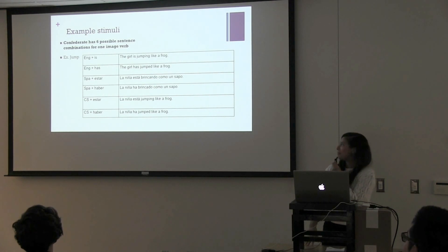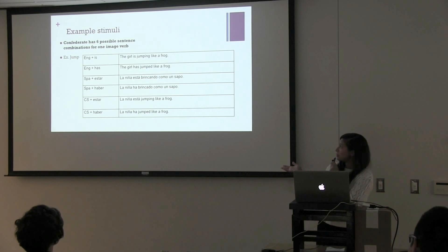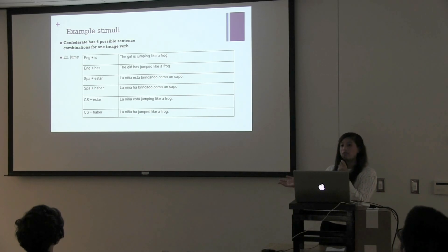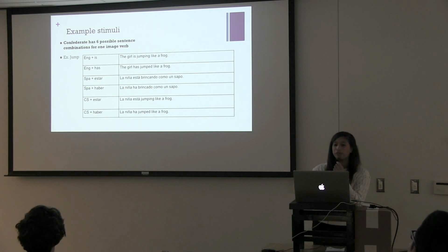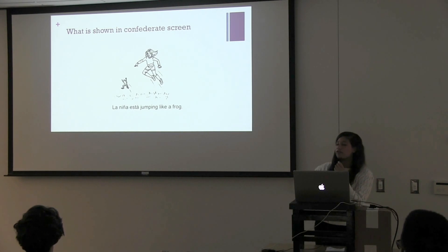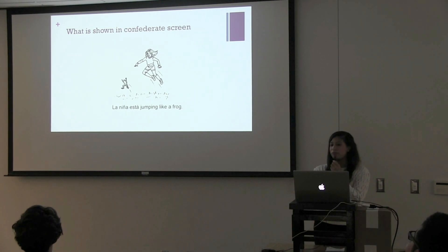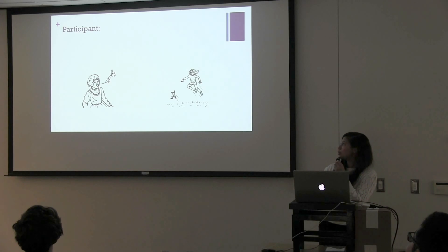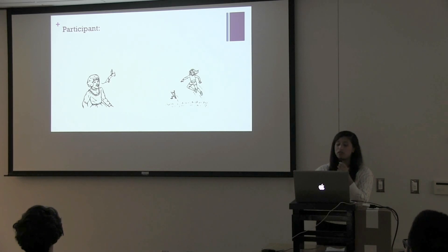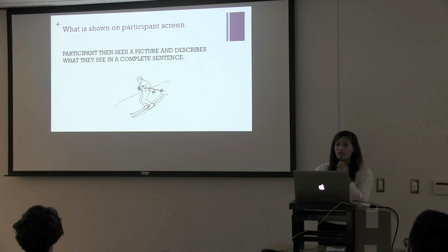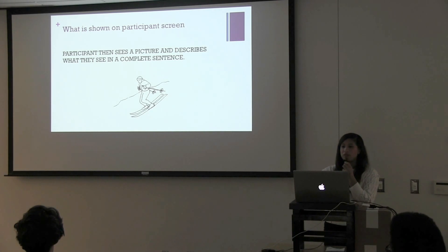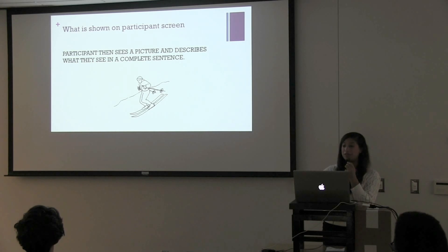For example stimuli: the confederate has six possible sentences that can show up on their screen along with a picture, but the participant doesn't know they're just reading the sentences — this is for our control. The participant has to choose which image represents what the confederate said. Then it's the participant's turn to speak. We're interested in seeing if they had been primed in any way by comparing the structure of the confederate's utterance to the structure that the participant produces.